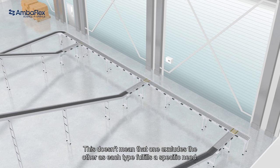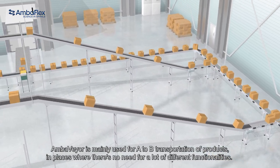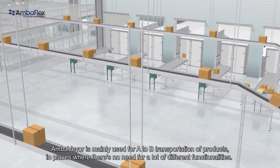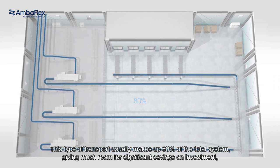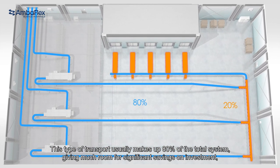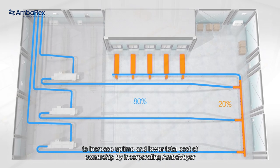This doesn't mean that one excludes the other, as each type fulfills a specific need. Amberveyor is mainly used for A to B transportation of products, in places where there isn't a need for a lot of different functionalities. This type of transport usually makes up 80% of the total system, giving much room for significant savings on investment to increase uptime and lower total cost of ownership by incorporating Amberveyor.